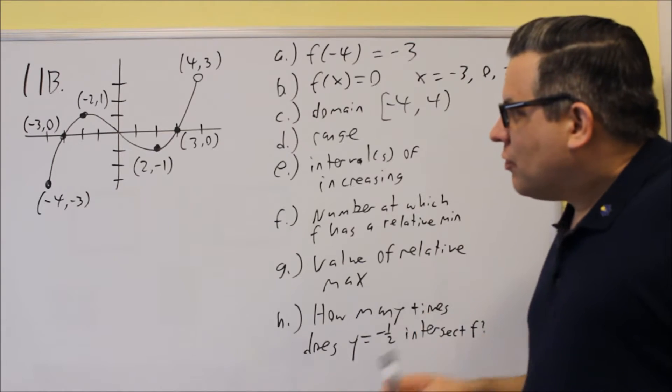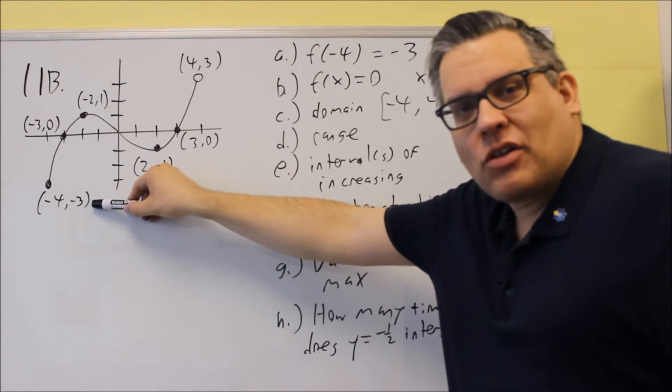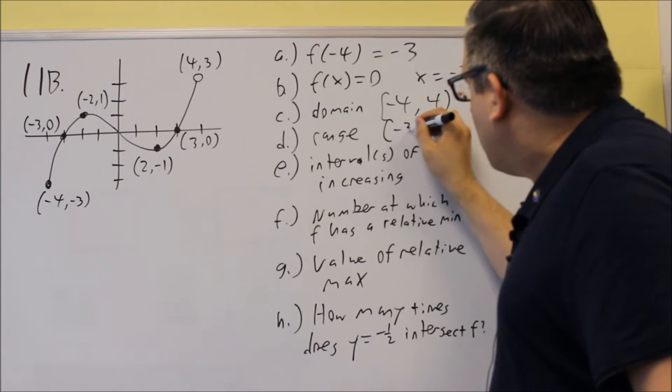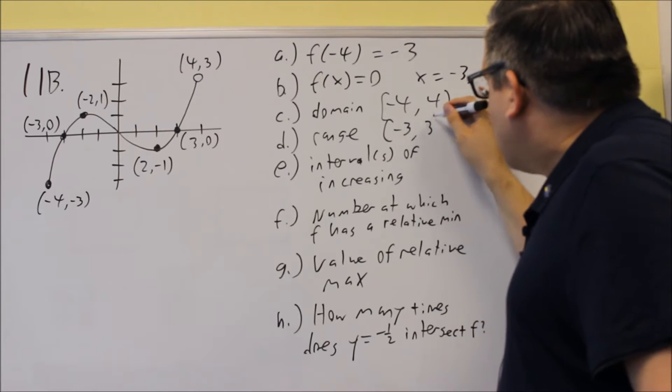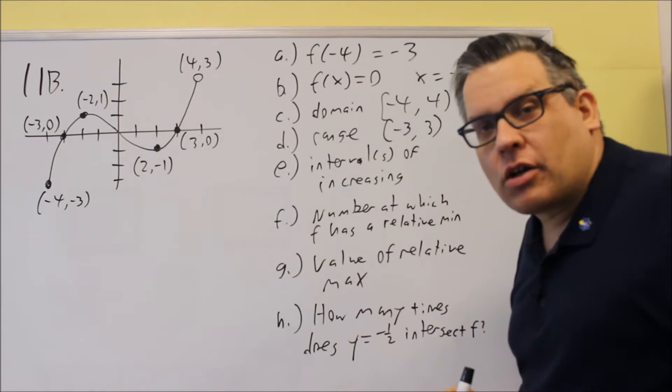For range, it's talking about all the y values the graph is using. Now, the smallest y value is -3, the highest one is going to be 3, but once again, the first one's going to have a bracket on it, but the second one will not. The 3 will not have it because the endpoint we're not including.